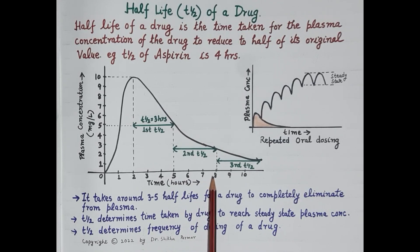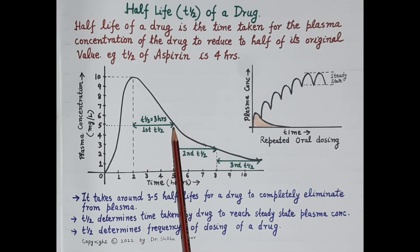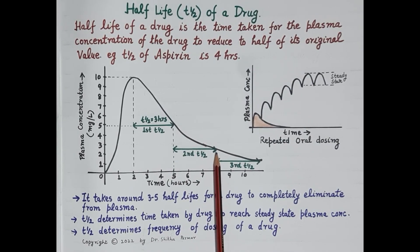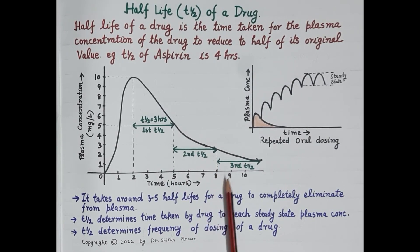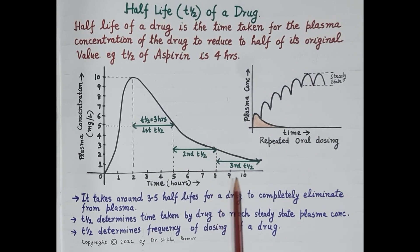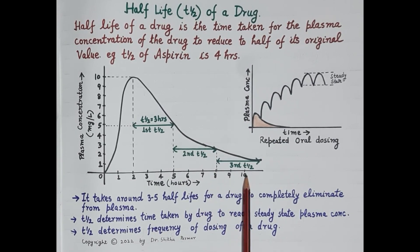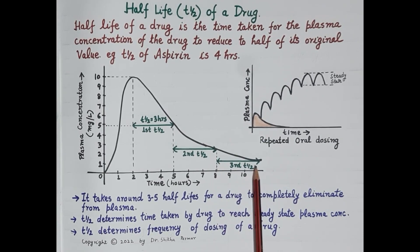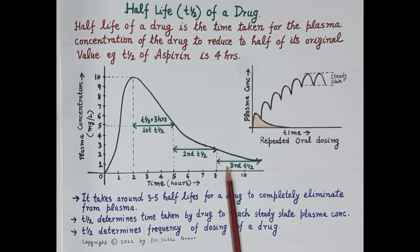In another three hours, the plasma concentration of the drug falls from 5 milligrams per liter to 2.5 milligrams per liter — this can be termed as the second T-half. After this, in another three hours, the plasma concentration falls from 2.5 milligrams per liter to 1.25 milligrams per liter, which can be termed as the third half-life.